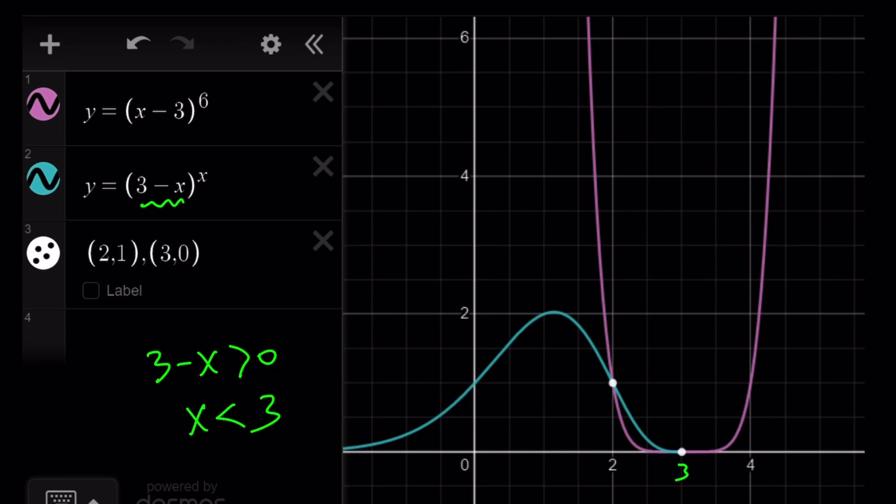So we only get two intersection points here, right? x equals 2 and x equals 3. And 3 is probably not even well defined because, well, actually, x can be 3. That's fine.